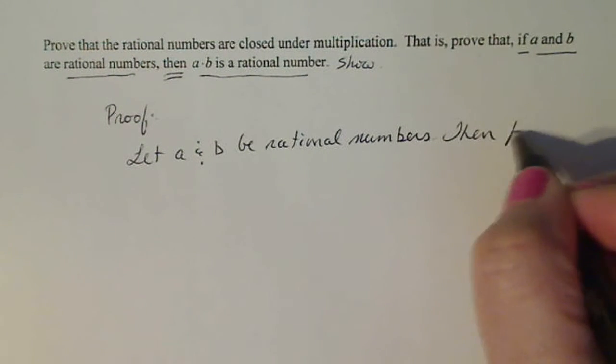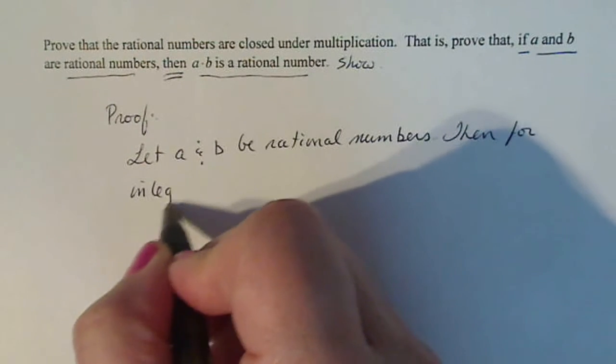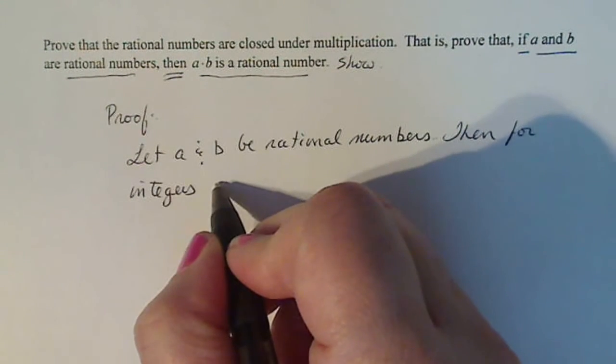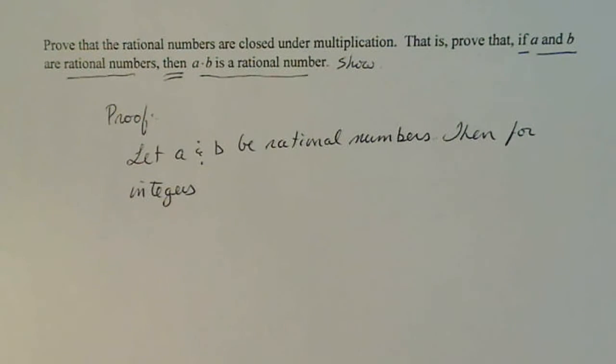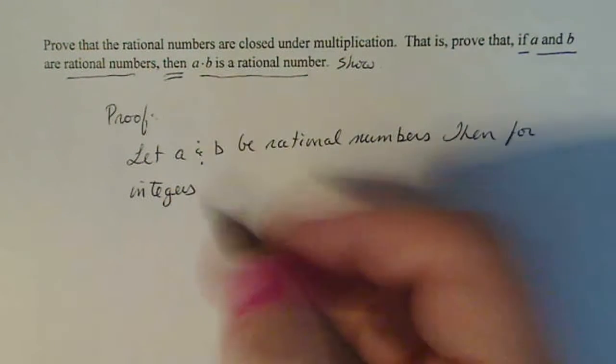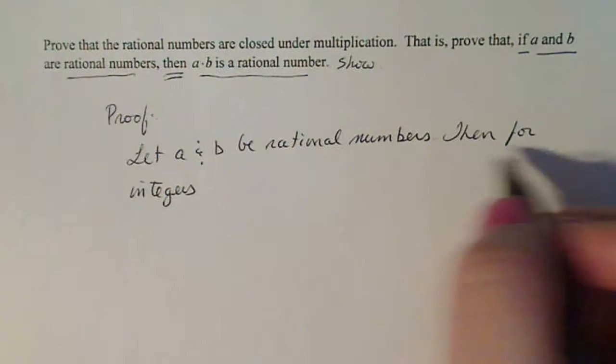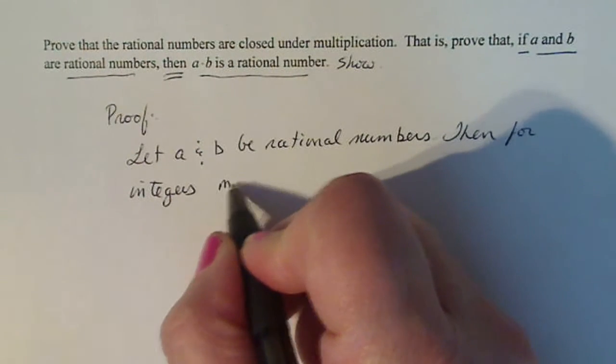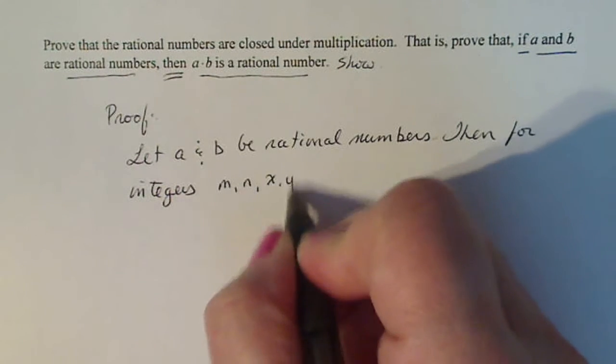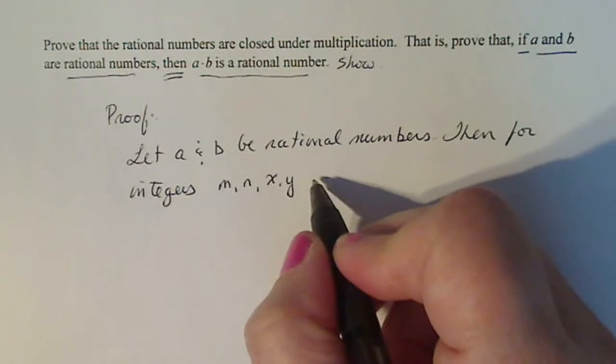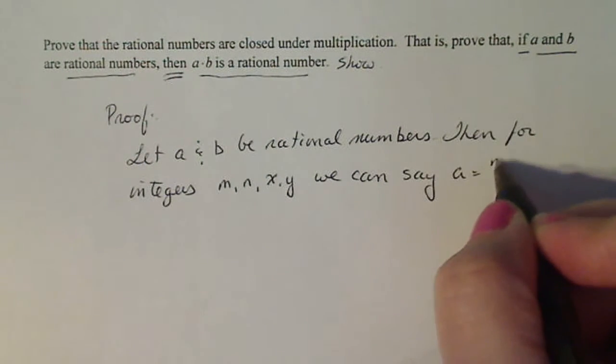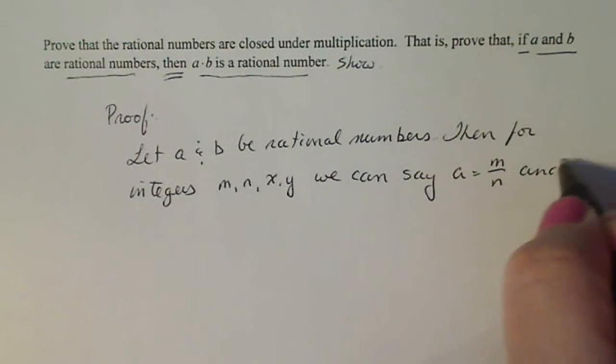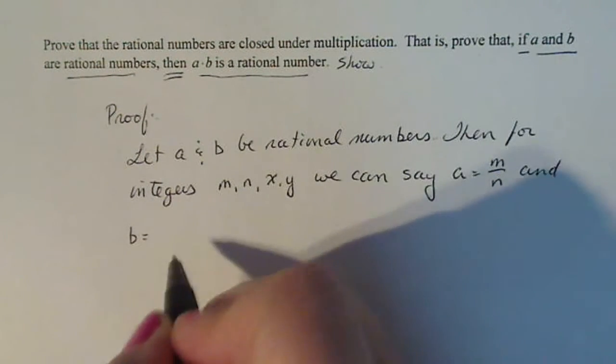Then for integers, and you can call these integers whatever you want. You just stay away from like X, Y's and Z's or F, G's and H's just because of what they usually represent. But for integers M, N, X and Y...